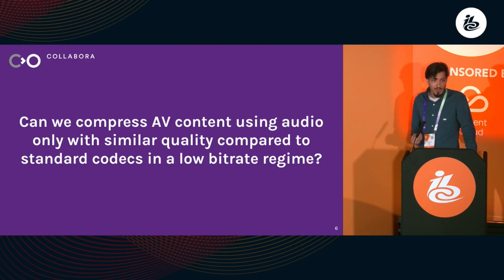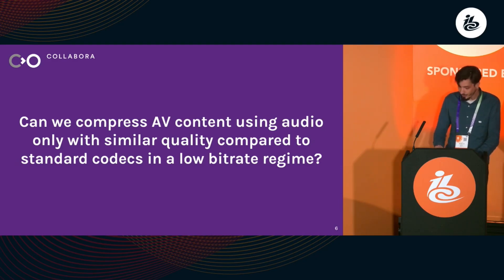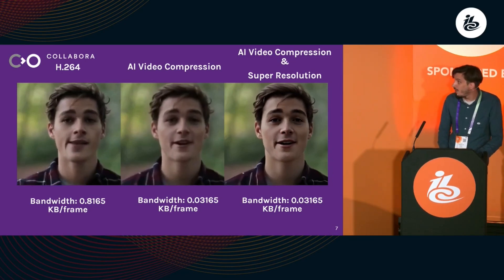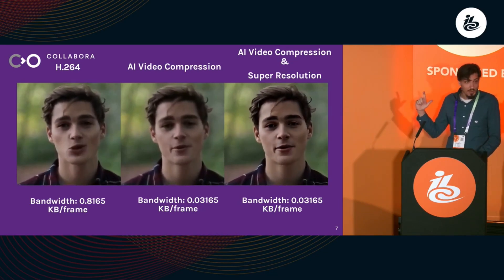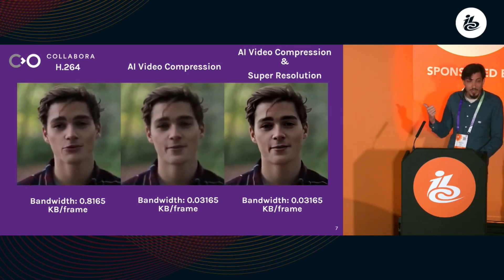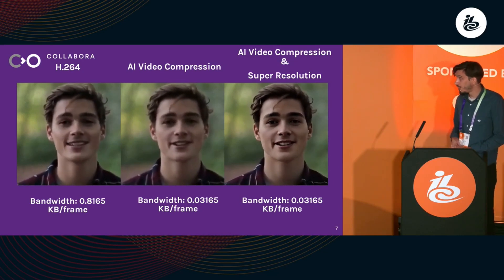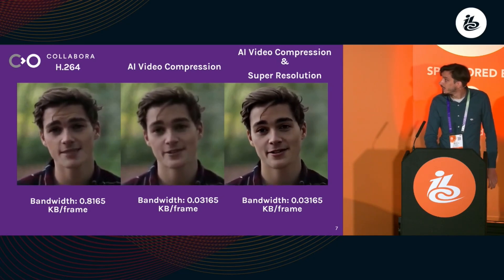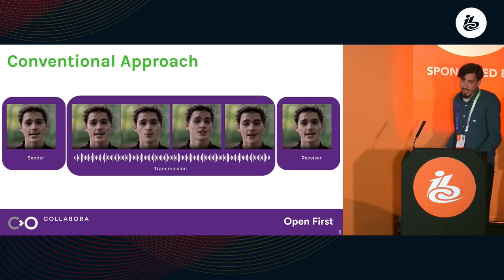We use state-of-the-art deep learning — a deep neural network, a decoder network — to compress video especially targeted at web video conferencing. This is basically an example of how it looks: a comparison between H.264 video compression and our video compression with super resolution on top of it to increase the overall quality of the image.